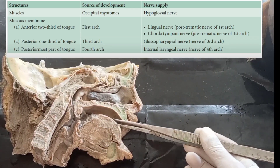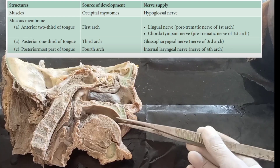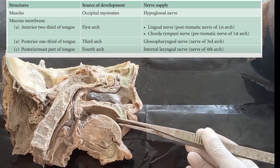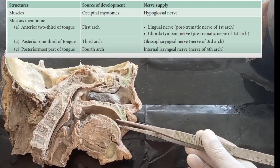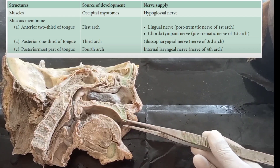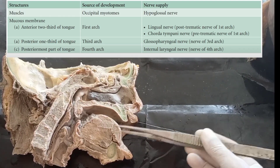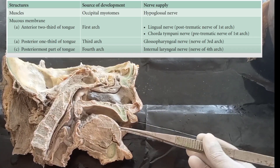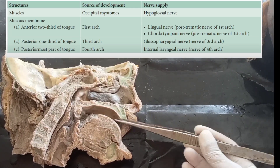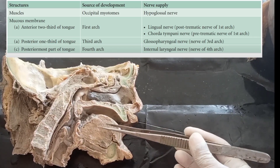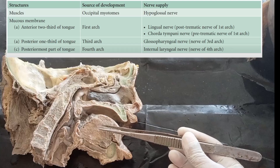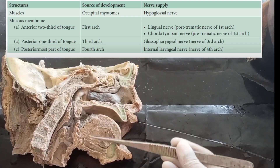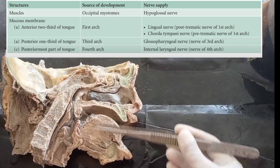The lingual nerve is a post-trematic nerve of the first arch, while the chorda tympani nerve is a pre-trematic nerve of the first arch. The posterior one-third is derived from the third arch, and the postermost part from the fourth arch. The posterior one-third is supplied by the glossopharyngeal nerve, the nerve of the third arch, and the postermost part by the internal laryngeal nerve, the nerve of the fourth arch.